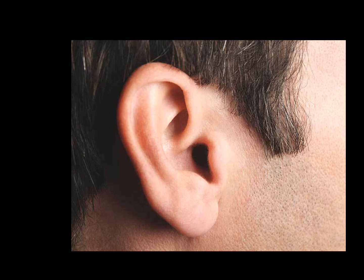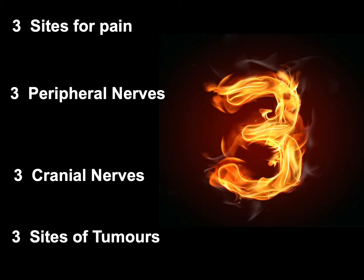The most important type — and the one most likely to appear in exam questions — is referred pain in head and neck cancer patients. To make it as simple as possible, I'm introducing what I call the rule of thumb of three: for each type and location of pain, you have to remember three sites around the ear, three peripheral nerves, three cranial nerves, and three tumor locations.